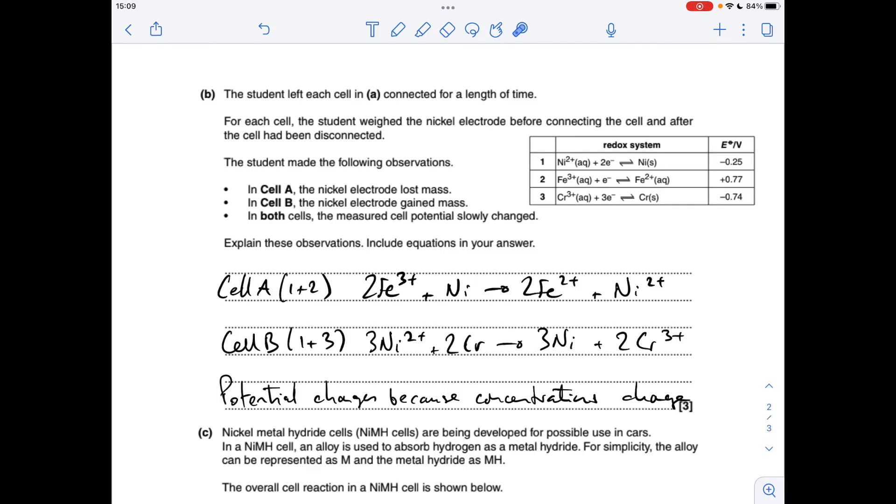And finally, in both cells, the cell potential slowly changes, and that's because the concentrations change. These voltages are only based on standard conditions, so that's one mole per decimeter cubed solutions. As soon as the cell operates, the concentrations of solutions are going to change, which means that the voltages change.